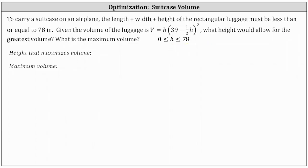In order to maximize the volume, we need to determine the critical numbers of the volume function by determining where the first derivative is equal to 0 or undefined. Notice that to find the derivative of v with respect to h, we will have to apply the product rule, where the first function is h and the second function is the square of (39 minus one half h).